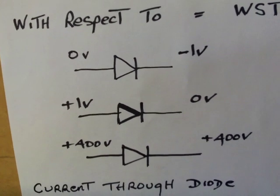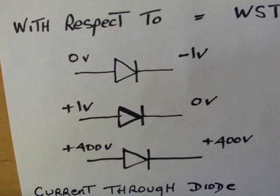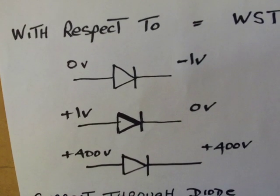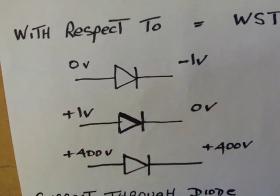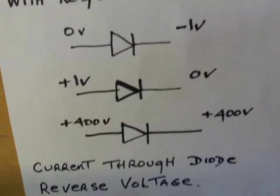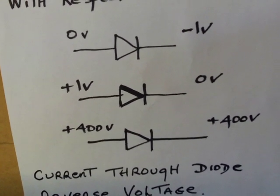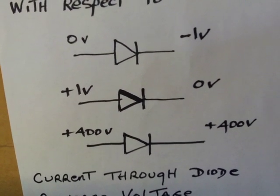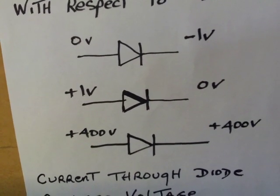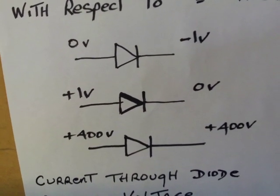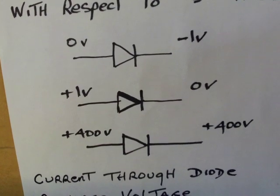The second diode: positive 1V on the anode, 0V on the cathode. Again that is forward biased, that diode will conduct. Third example: plus 400V on the anode, plus 400V on the cathode. There is no voltage potential difference between anode and cathode. There is no 0.7V. That diode is not conducting.